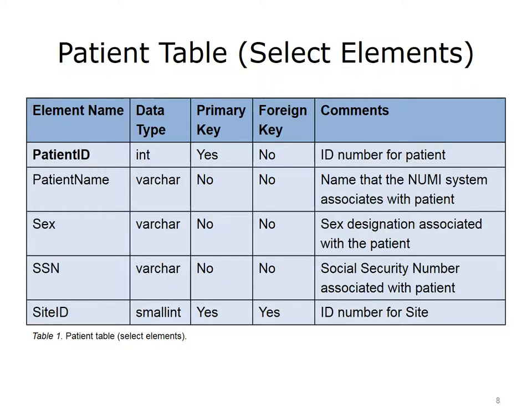For each table, the column information shows the element or column name, the data type for the VA database, whether the column is a primary or foreign key, and comments about that element. Each row contains information about this data element in the corresponding table. For the patient table, there is information for about 5 of the elements in the table. You can see the VA System Management Guide for details about all 15 elements. The first element, patient ID, has an int data type. This field is the primary key for the table, and represents the ID number for the patient.